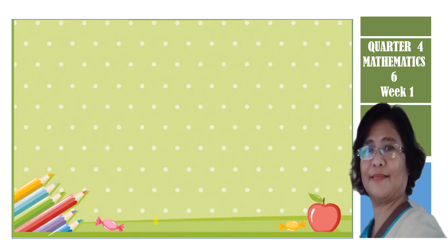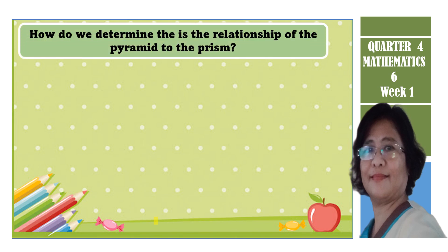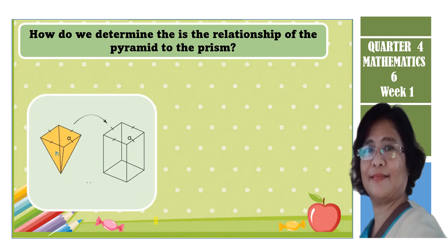Let us talk about the relationship between the pyramid and the rectangular prism. If the pyramid has the same base and height as the rectangular prism, how are they related to each other? Let us fill the pyramid with liquid and transfer the content to the rectangular prism. It turns out that it takes three pyramids full to fill the rectangular prism.